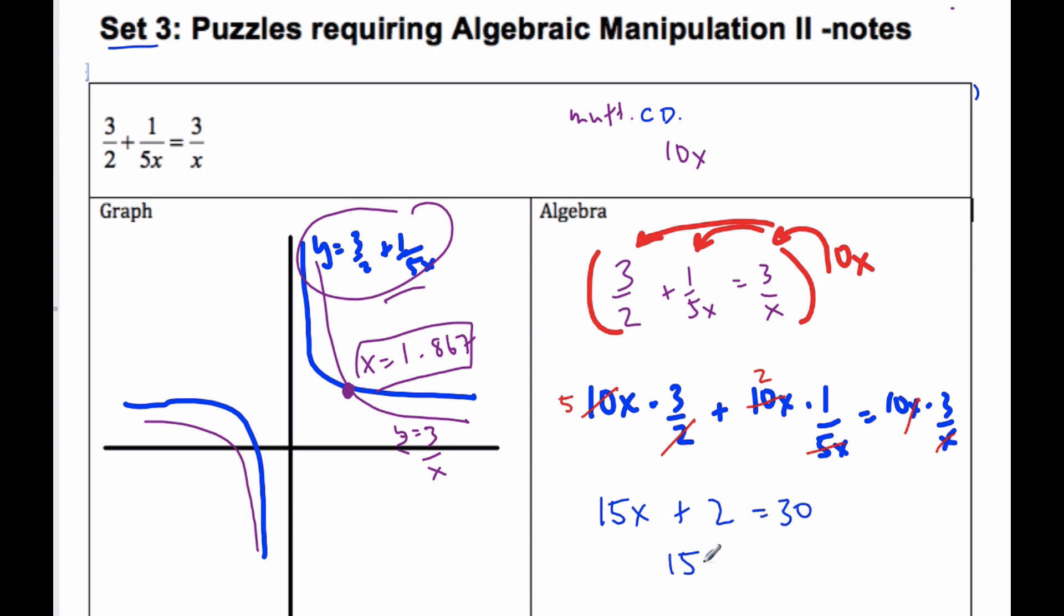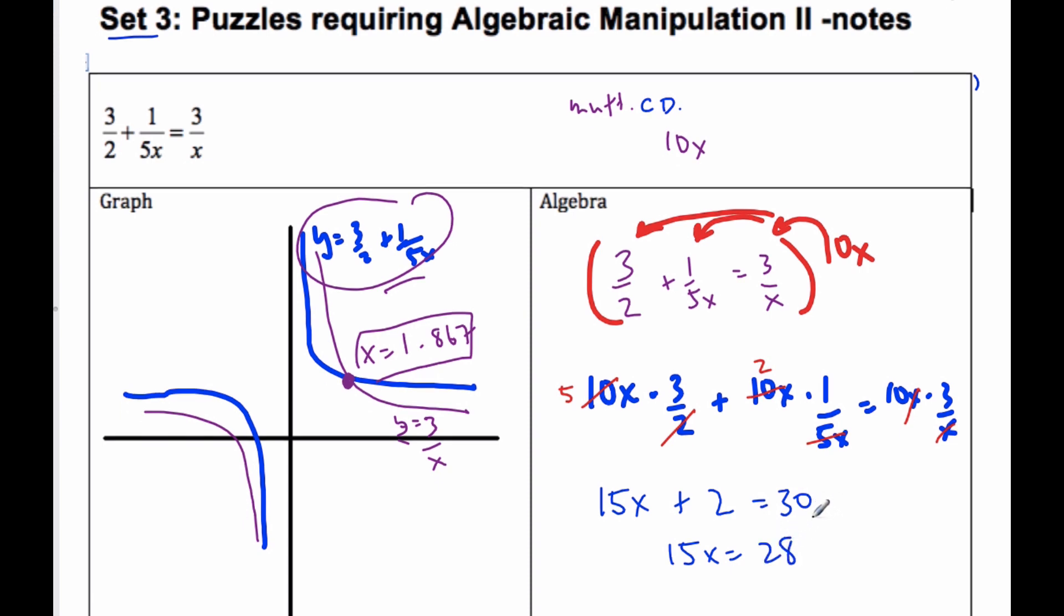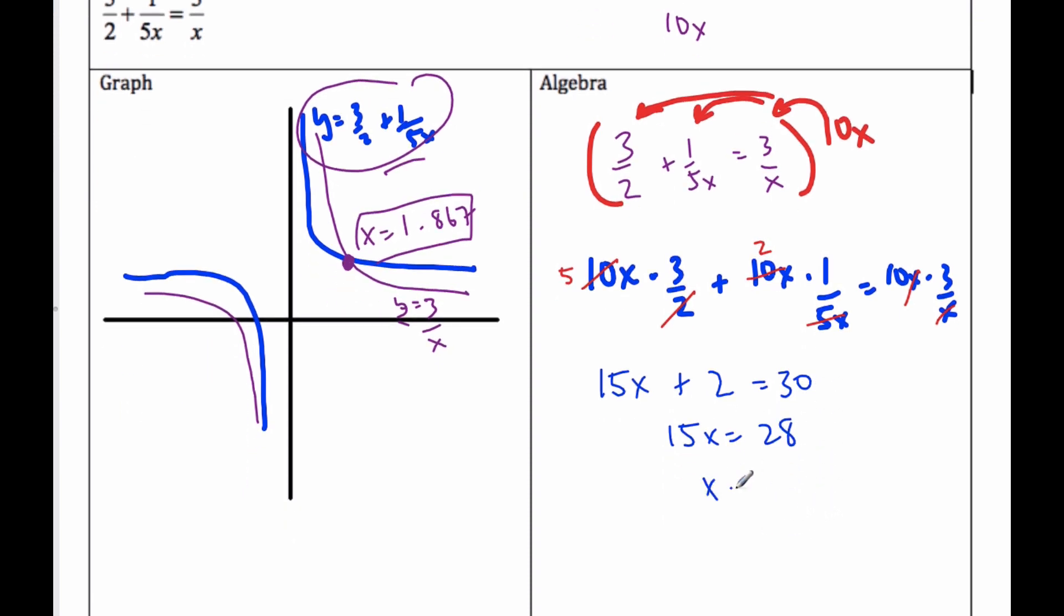Subtract the 2, I get 15x is equal to 28. And then I'm going to divide by 15, x will be 28 over 15.